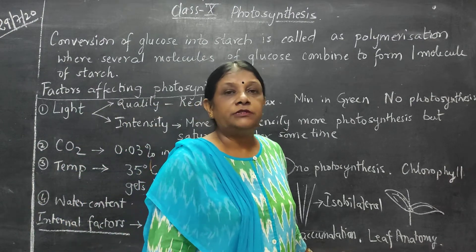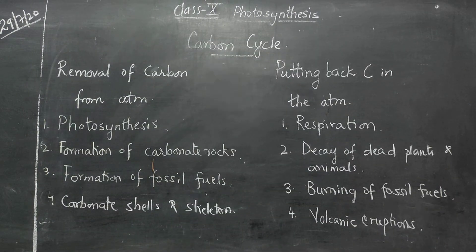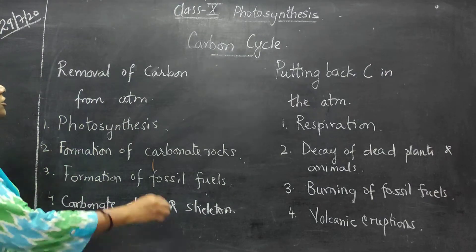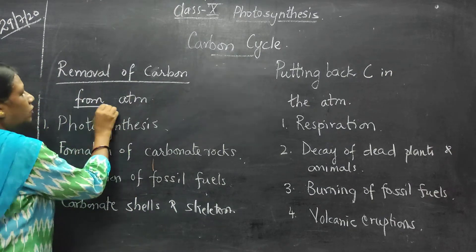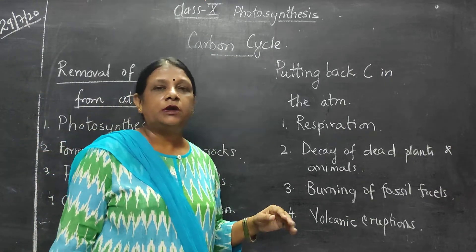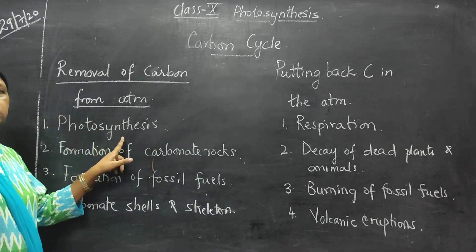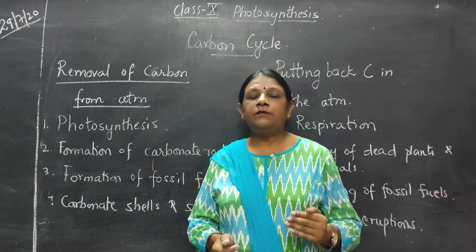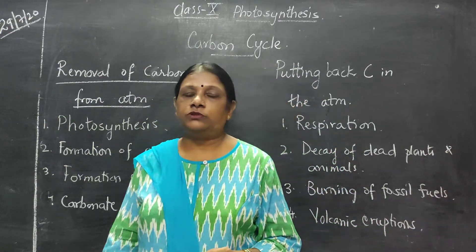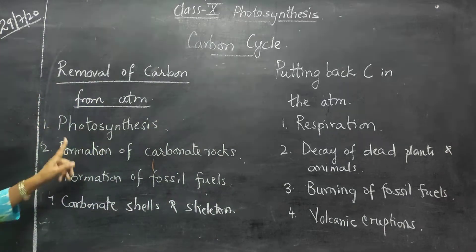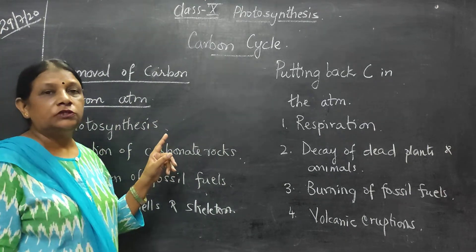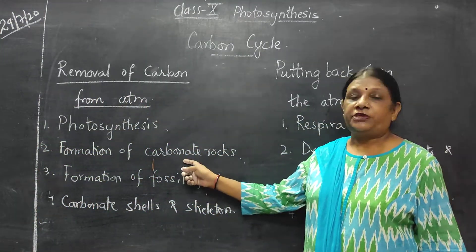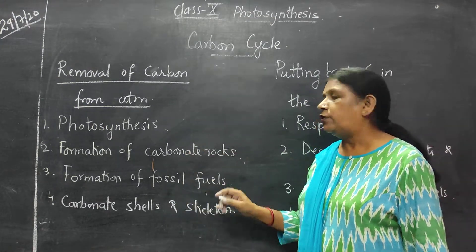Now we are going to study about the carbon cycle. There are two aspects: removal of carbon from the atmosphere and putting it back. How is carbon removed from the atmosphere? First is photosynthesis — plants use up carbon dioxide and give out oxygen. Second is formation of carbonate rocks, where carbon from the atmosphere is fixed.